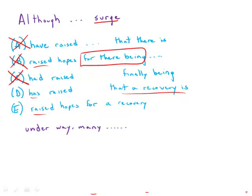And that's exactly what D is saying. E is saying hopes for a recovery. Well, that's implying more that the recovery is there and we're entertaining some hopes about the recovery. It's something that doesn't quite fit the context of what we're talking about here. So E is incorrect.